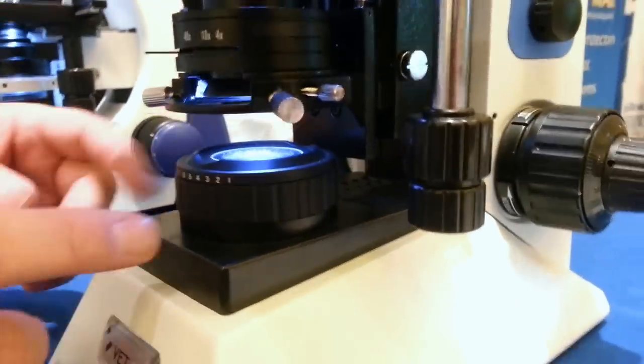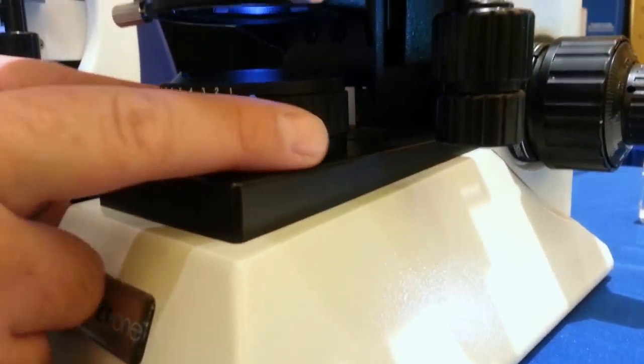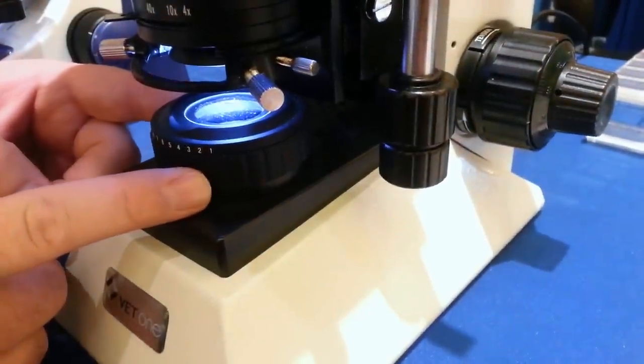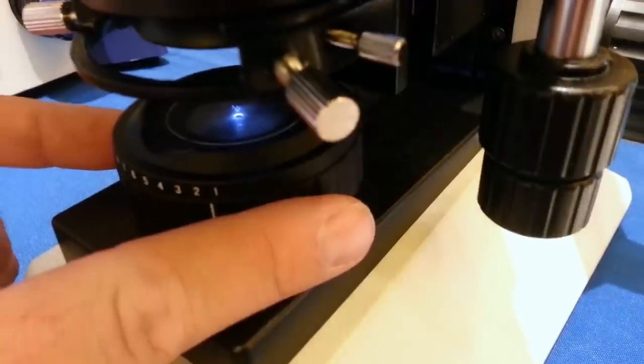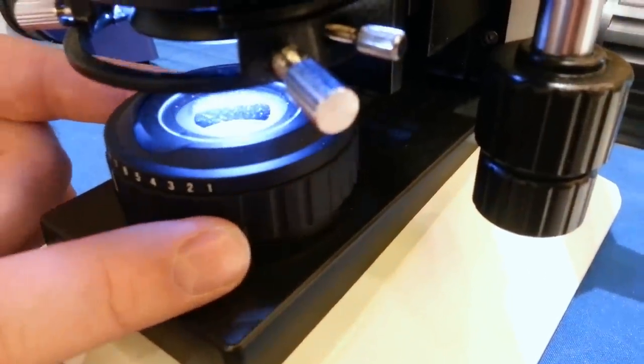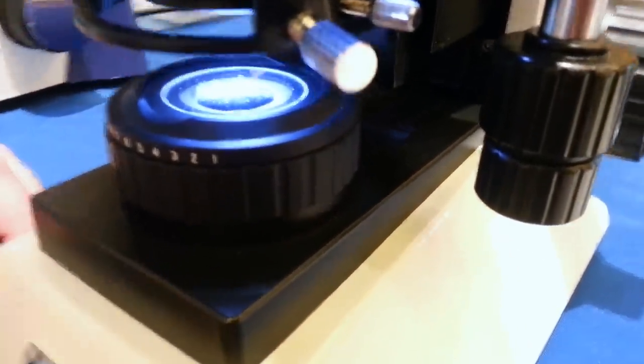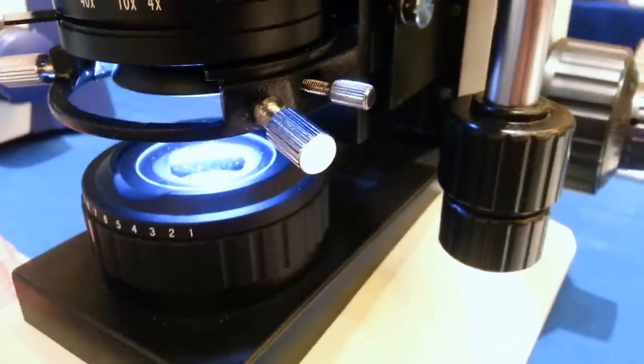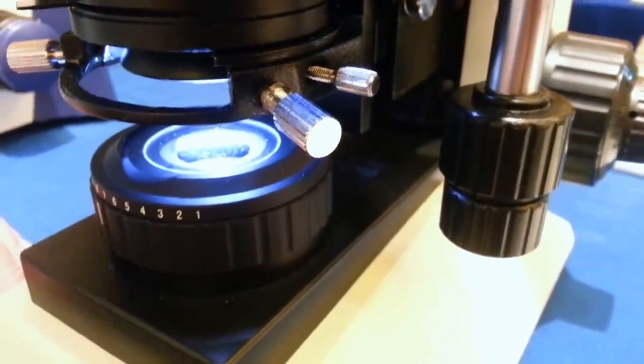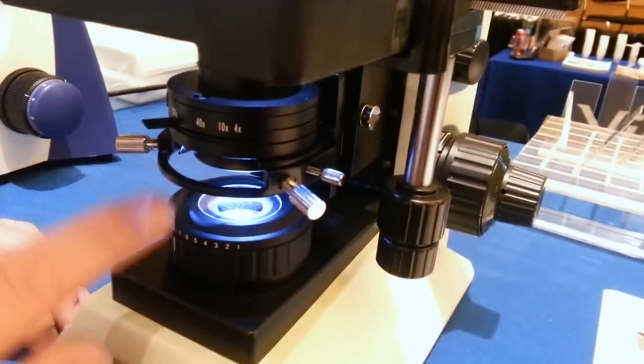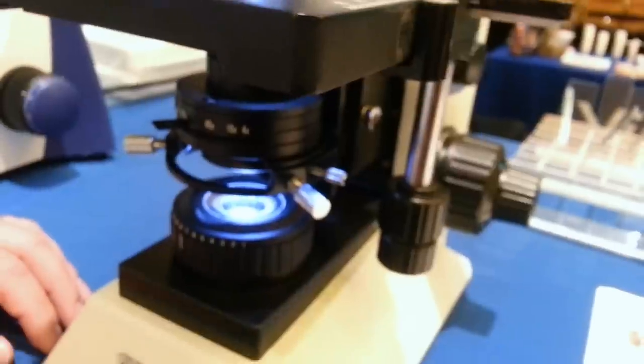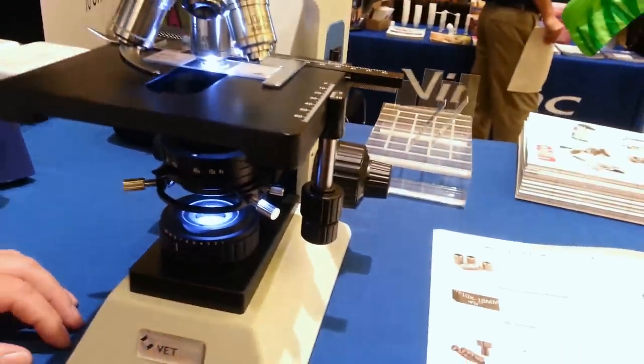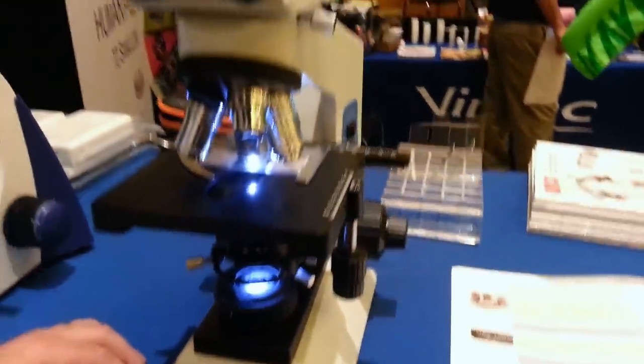And down here in the illuminator, we also have, you can see maybe from the top angle, this is a Kohler iris, a Kohler illumination iris. You can see that it's adjustable and it's also graduated. Very useful if you've got multiple people using a microscope in a practice. You can designate exactly what settings you want to have this set at based on the type of specimen you're viewing. That way everybody in the practice who's using the scope is looking at the specimens the same way.